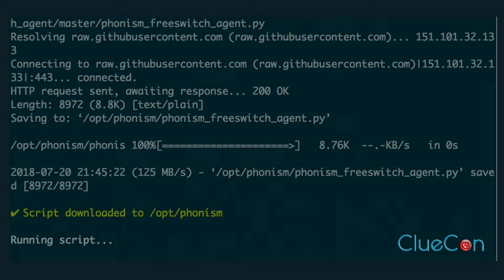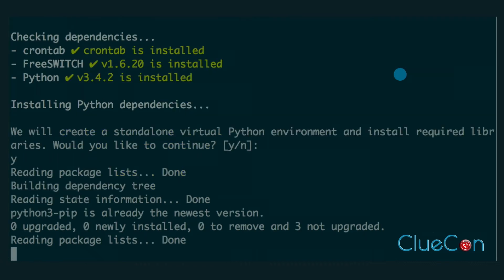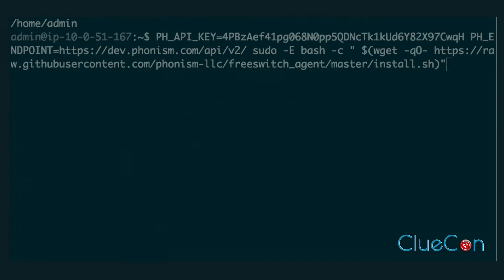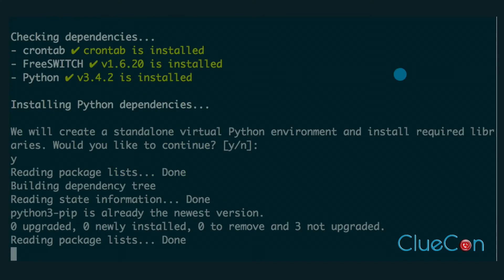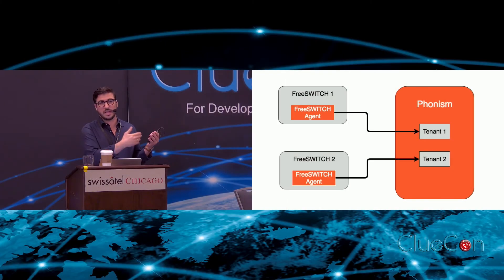The data that we synchronize in this first version is the user database. If you think about device management and deploying devices and provisioning, you assign usernames and passwords to these devices, plus a bunch of other settings. Synchronizing usernames and passwords to a centralized provisioning system is one of the big things. As you can see in this diagram, Phonism is a multi-tenanted system. The agent is simply an application that runs on each FreeSwitch instance, mapped to a single tenant inside your Phonism account.